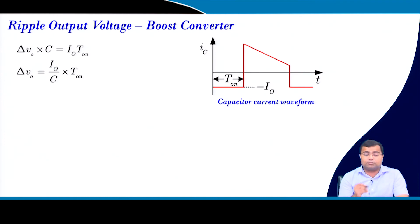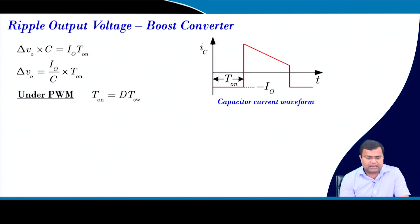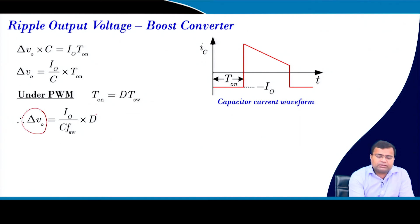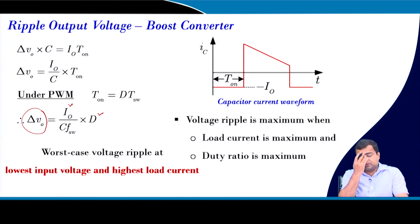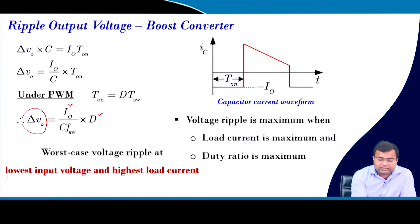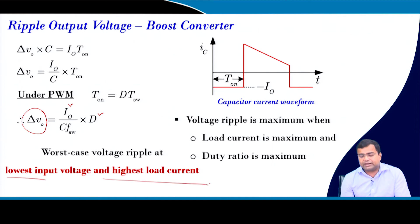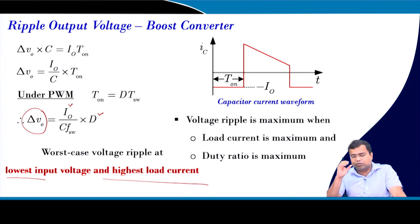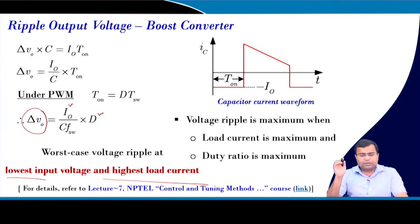For the boost converter output voltage ripple, it is a function of load current. Under PWM, the ripple voltage is maximum when D is maximum and load current is maximum — i.e., the worst case is lowest input voltage and highest load current. Capacitor selection must ensure the ripple constraint is met across the entire range of load current and input voltage conditions.